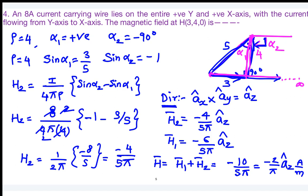Now you understand the procedure. The key points to remember: α₁ is the angle made by the initial point, α₂ is the angle made by the final point, and the arrow must always point toward the radial line. If you remember these two points, you will never make a mistake regarding α₁ and α₂.